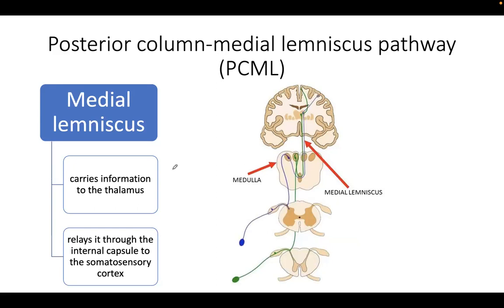The medial lemniscus carries sensory information to the thalamus. The structure that carries information to the thalamus is the medial lemniscus. It will then relay this information through the internal capsule to the somatosensory cortex — thalamus, internal capsule, then somatosensory area.